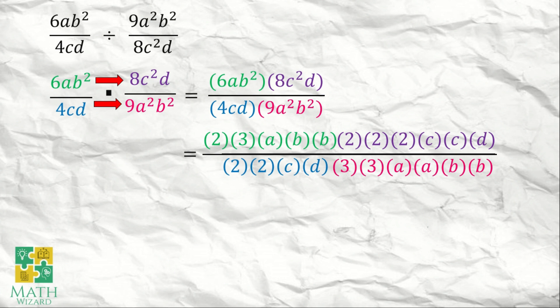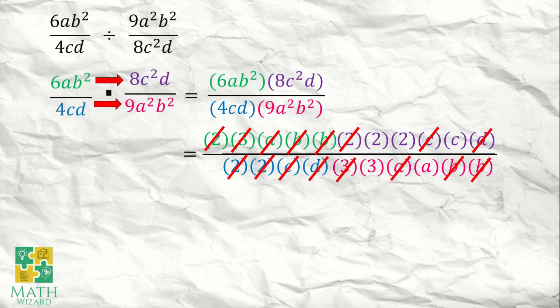And 9a squared b squared becomes 3 times 3 times a times a times b times b. We need to cancel the common terms. We have 2 and 2, 3 and 3, 2 and 2, a and a, b and b, another b and b, letter c and letter c, letter d and letter d.